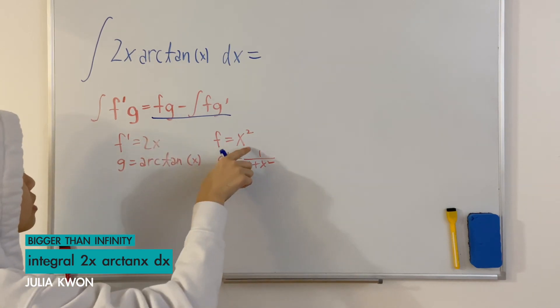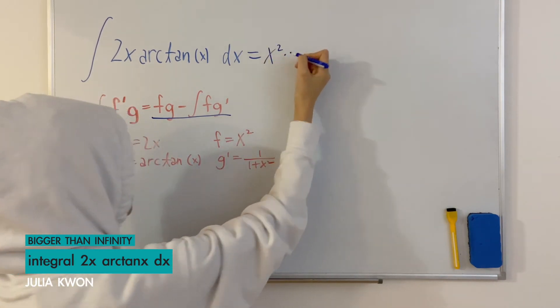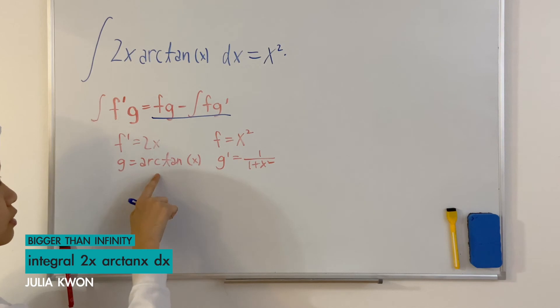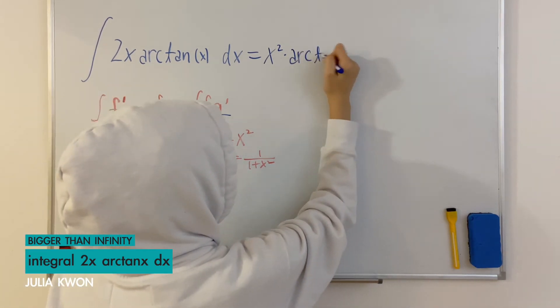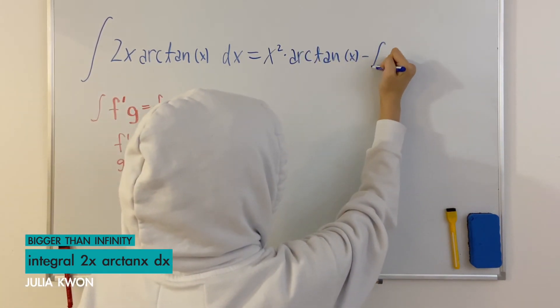f is equal to x squared times the g which is equal to the arctangent x and minus the integral of